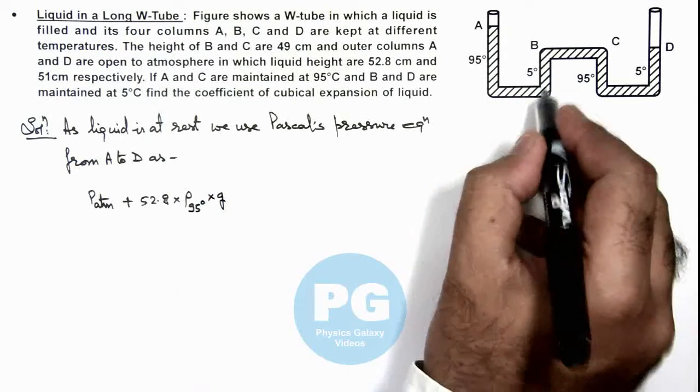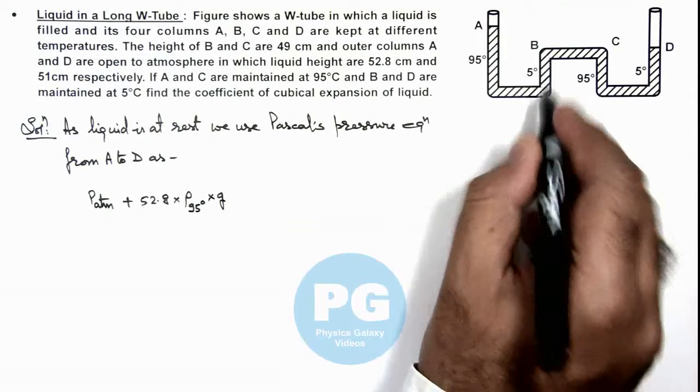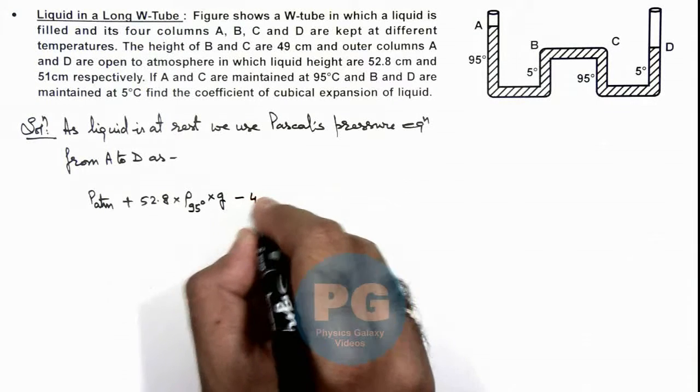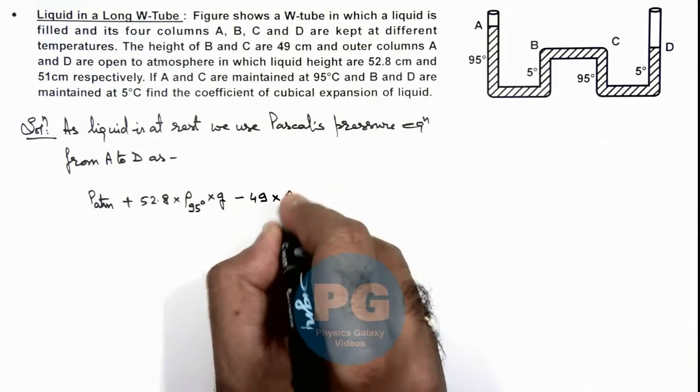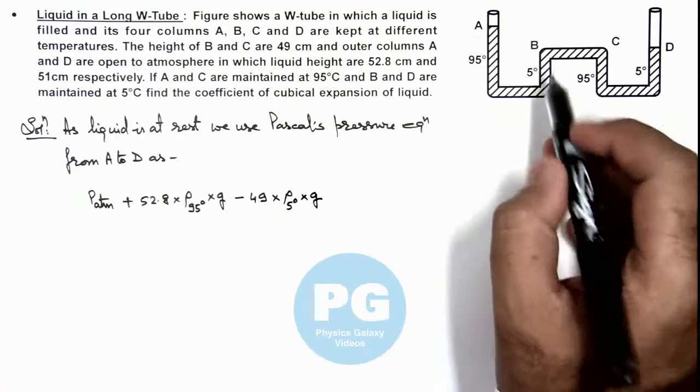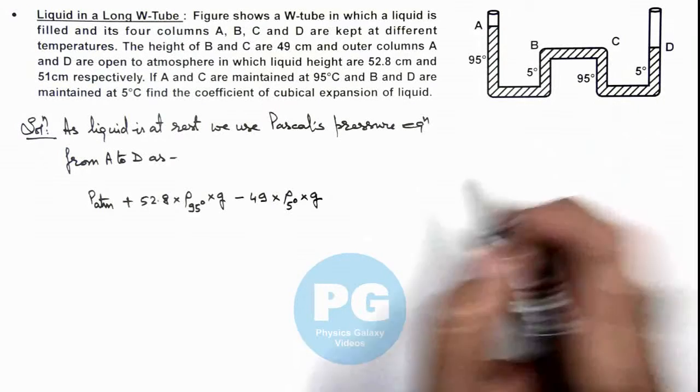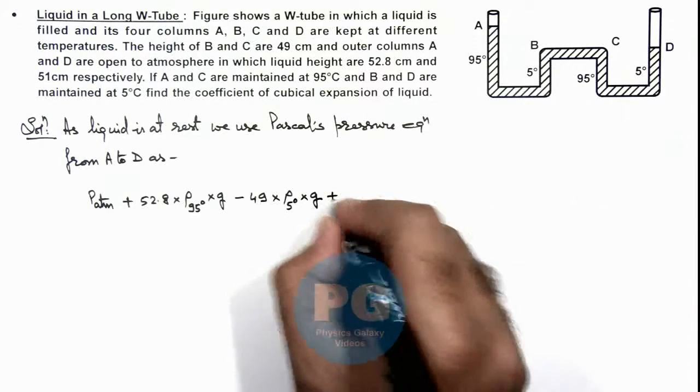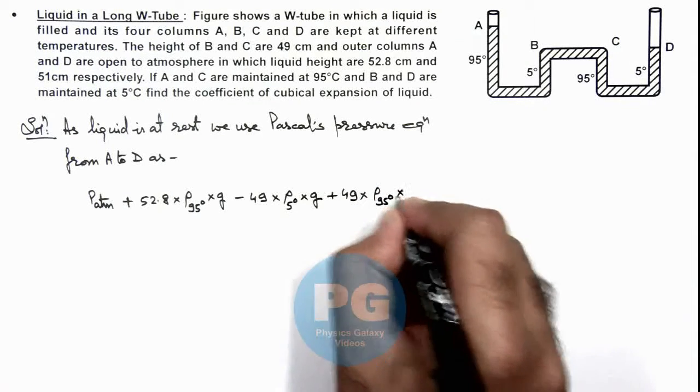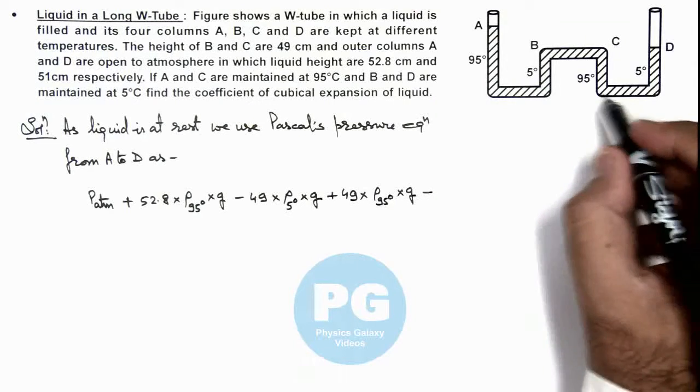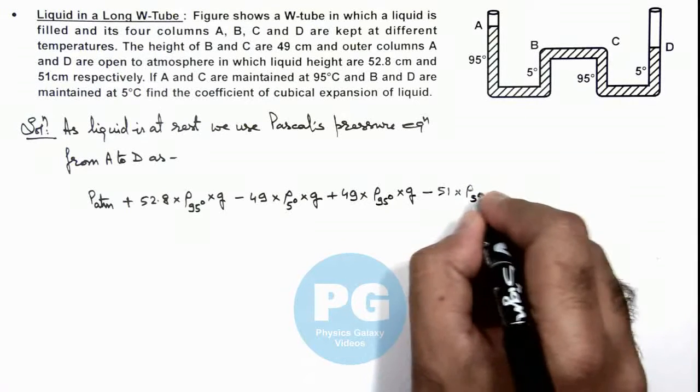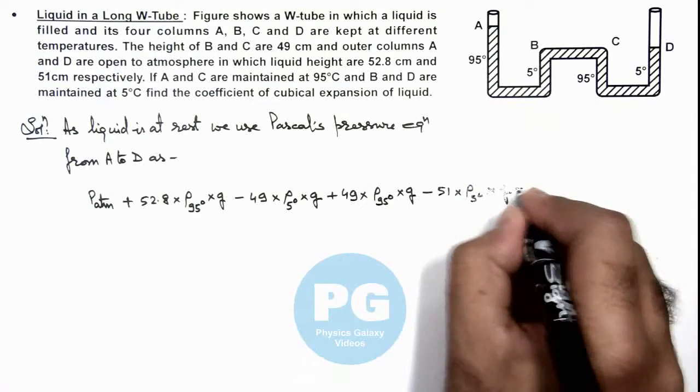Then if we move up here at horizontal column the pressure remains same. If we move up, here pressure will be minus 49 multiplied by density at 5 degree Celsius multiplied by g. Then again pressure along the horizontal level remains same. If we come down it is plus 49 multiplied by density at 95 degree multiplied by g. Then again minus if we move up, this 51 multiplied by density at 5 degree Celsius by g is equal to P atmospheric.